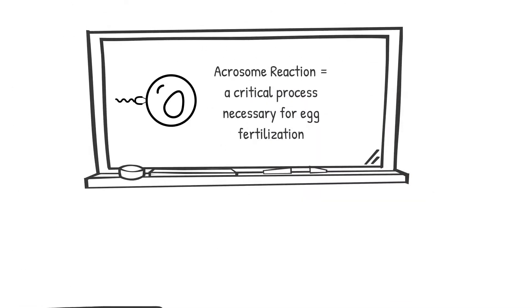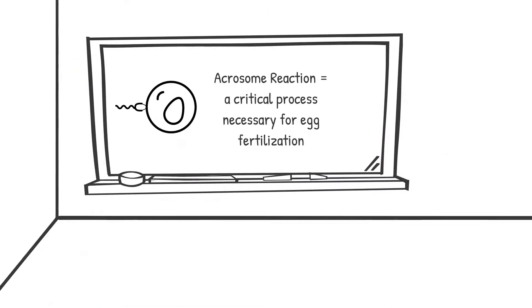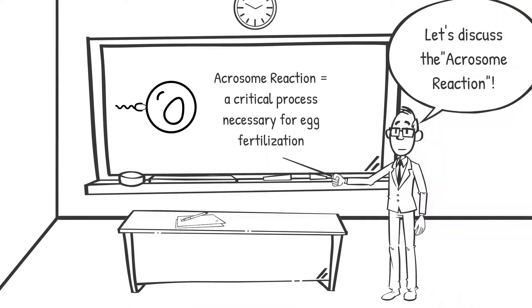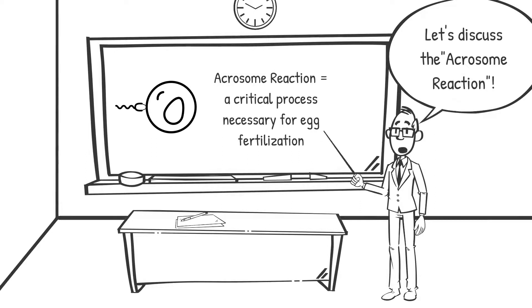In order to initiate fertilization, a sperm must first fuse with the plasma membrane of the female egg cell, known as the zona pellucida, and then penetrate through the membrane to fertilize it.